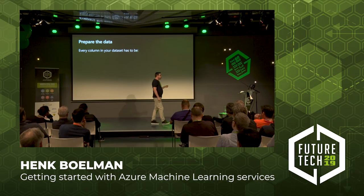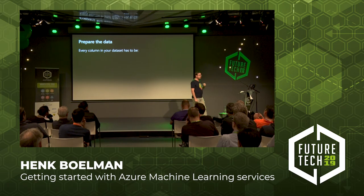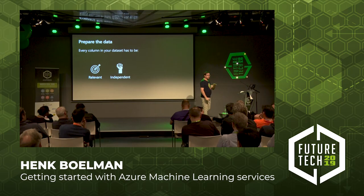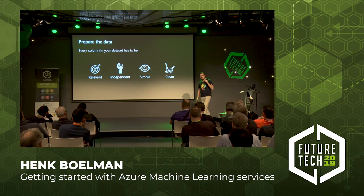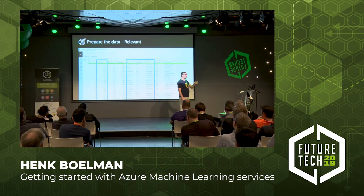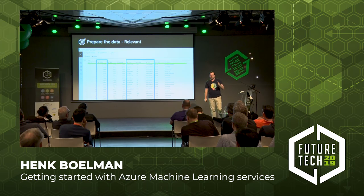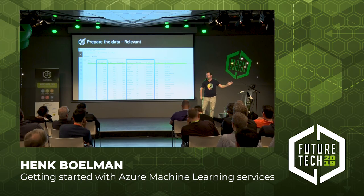Now I can start preparing the data. For every column you have to ask yourself: is this column relevant to answer my question? Is it independent? Is the data simple enough? And is it clean? For example, in this dataset there is a column about the price — that's quite relevant. But there is also a column for VIN number. Is that relevant? No, absolutely not — just throw it away. Don't use it to train your algorithm.